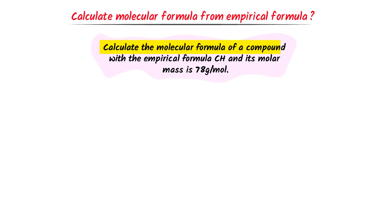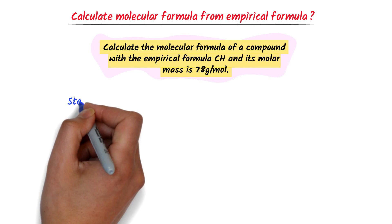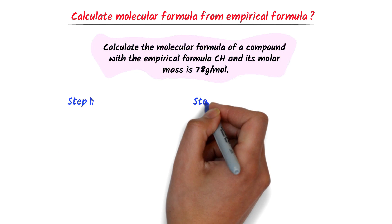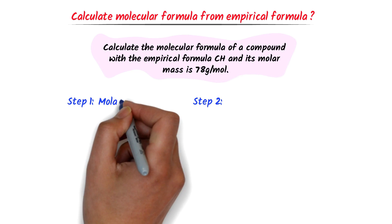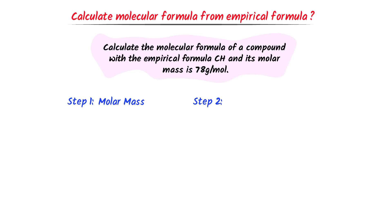Consider this example: calculate the molecular formula of a compound with the empirical formula CH and its molar mass is 78 gram per mole. I use two simple steps to calculate it. Firstly, I find the molar mass of empirical formula.